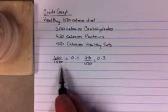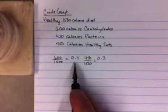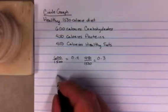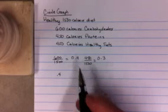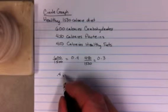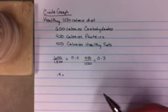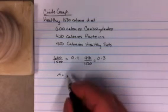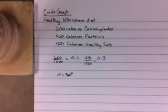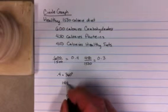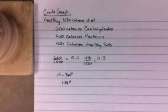Once we have this fraction, we change it into a decimal. We actually want to take that decimal, that's the part of the circle, and multiply it by the total number of degrees in a circle, which is 360 degrees. So 0.4 times 360 degrees, if you punch it in your calculator, you get 144 degrees.